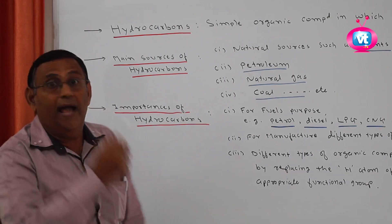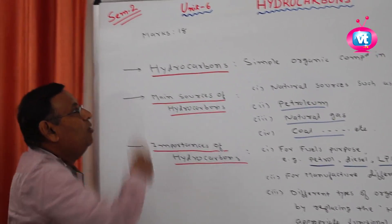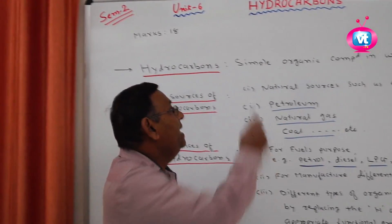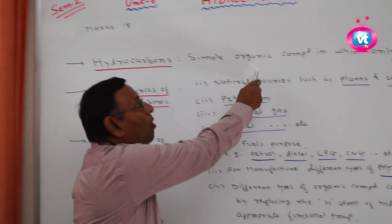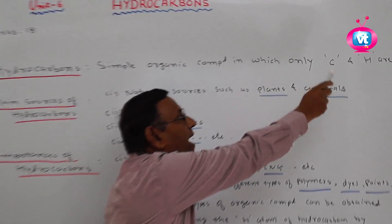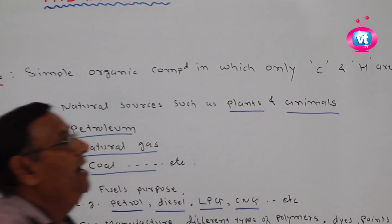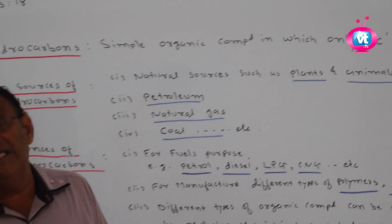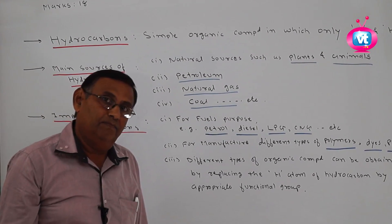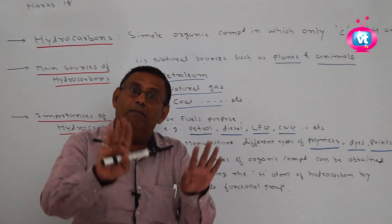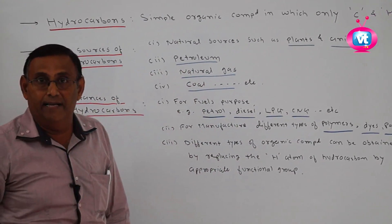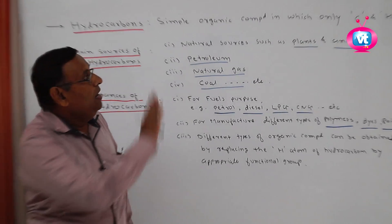So now we define hydrocarbon. A simple organic compound in which only carbon and hydrogen atoms are present is called a hydrocarbon. In a hydrocarbon, no other elements are there — only carbon and hydrogen.